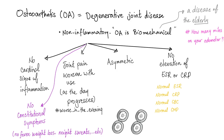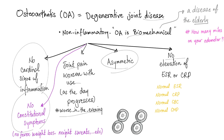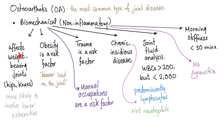Osteoarthritis is a degenerative joint disease. It's non-inflammatory, it's biomechanical — no cardinal signs of inflammation, no constitutional symptoms. Joint pain is worse with use, worse in the evening, asymmetric, no elevation of ESR or CRP or any other inflammatory marker. Osteoarthritis affects the weight-bearing joints. Obesity is a risk factor, trauma is a risk factor, manual occupations is a risk factor. It's a chronic insidious disease, therefore lymphocytes are found in the joint.